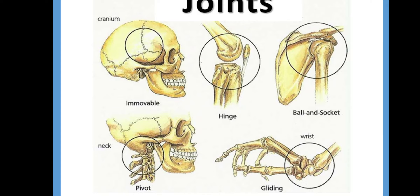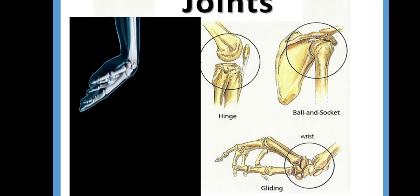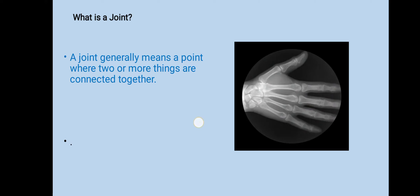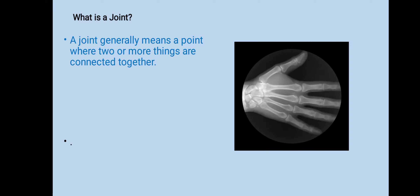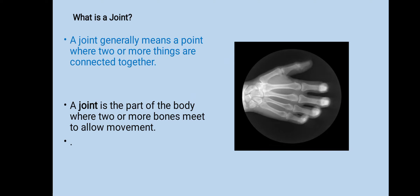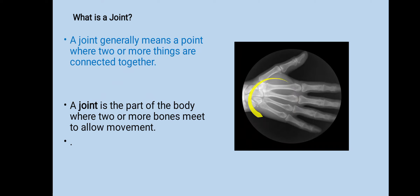Today we are going to learn about joints. A joint generally means a point where two or more things are connected together. A joint is the part of the body where two or more bones meet to allow movement.